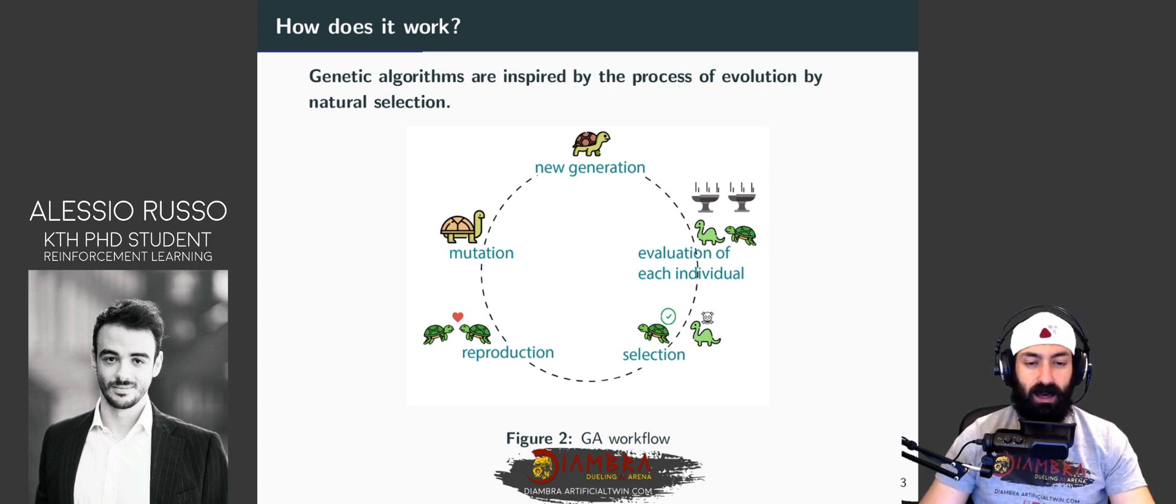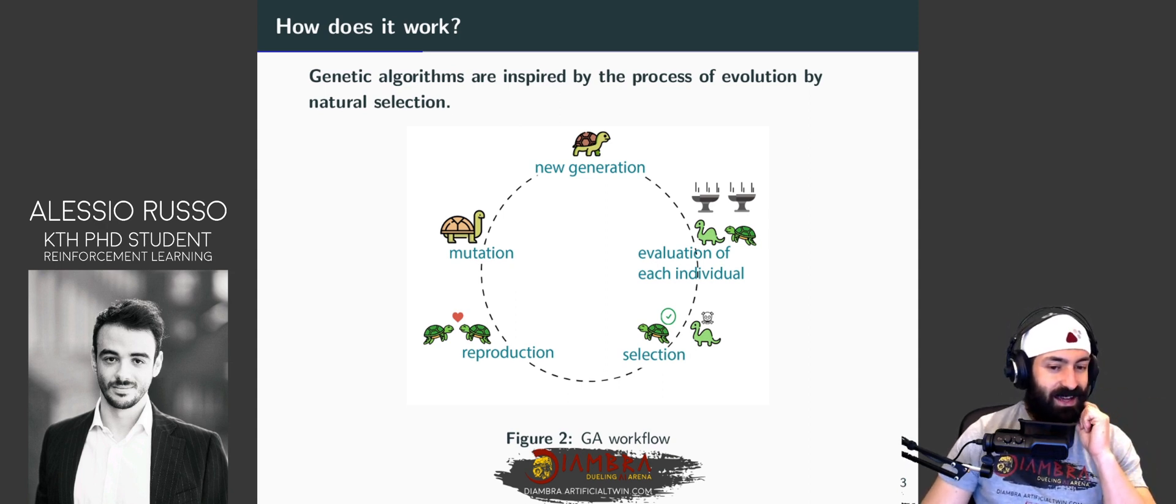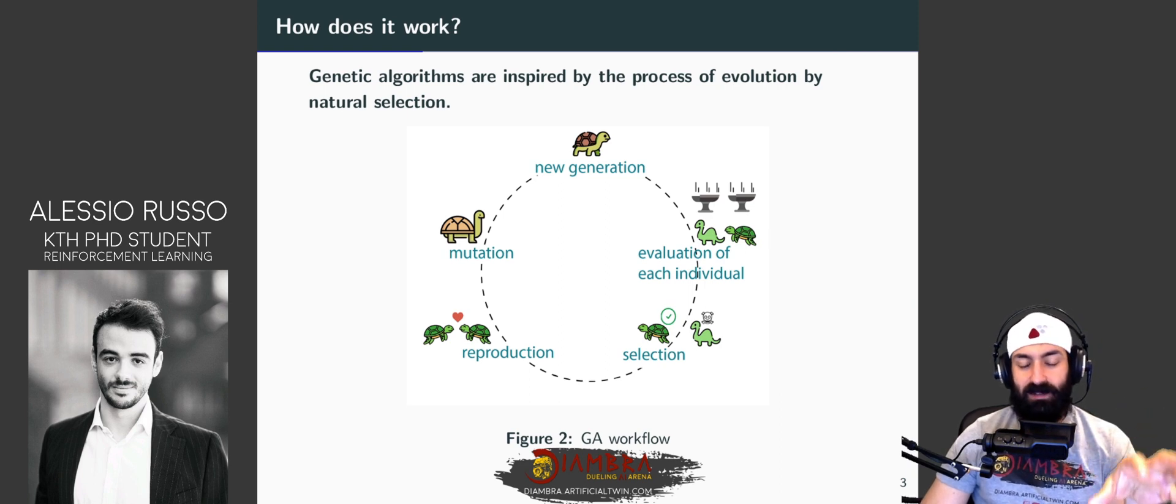So I do have a question. I'm slightly familiar with these approaches. And, you know, reproduction as well as mutation are usually very specific to the type of variables you have to deal with. And so I'm really curious.